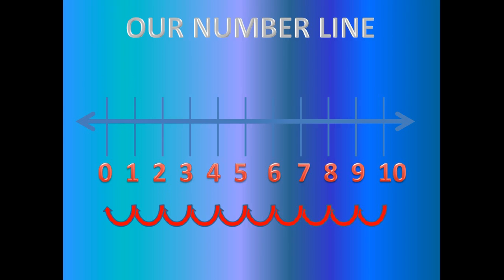Zero is the lowest number on the number line, and it's smaller than numbers one, two, three, four, five, six, seven, eight, nine, and ten.